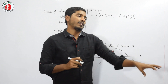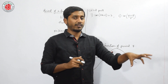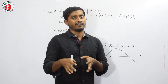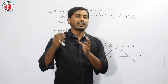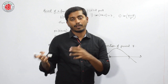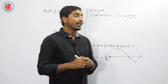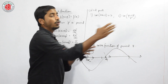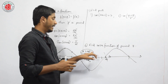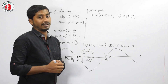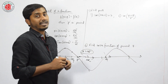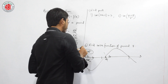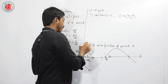For example, if my class is 45 minutes, then after 45 minutes the next teacher will come, then the next teacher will come. Similarly, here also the same thing will repeat after 2pi radians. We can define this as the period of a function.